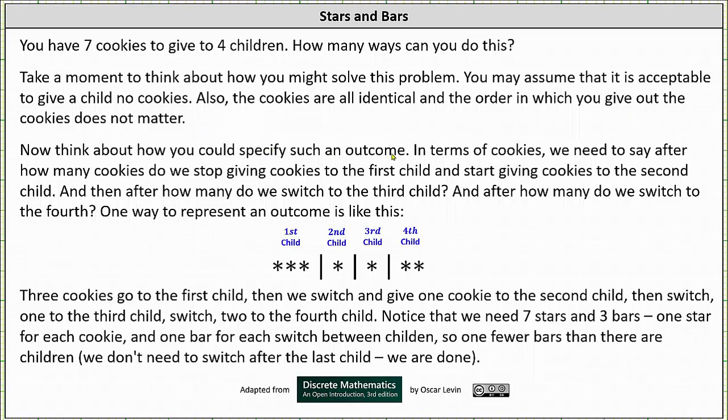Now think about how you could specify such an outcome. In terms of cookies, we need to say after how many cookies do we stop giving cookies to the first child and start giving cookies to the second child. And then after how many do we switch to the third child and then after how many do we switch to the fourth.